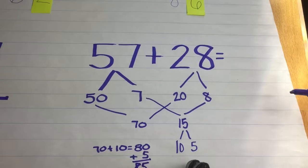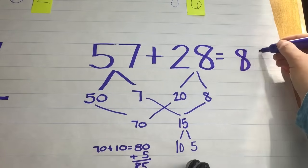So our answer then, going back to 57 plus 28, equals 85.